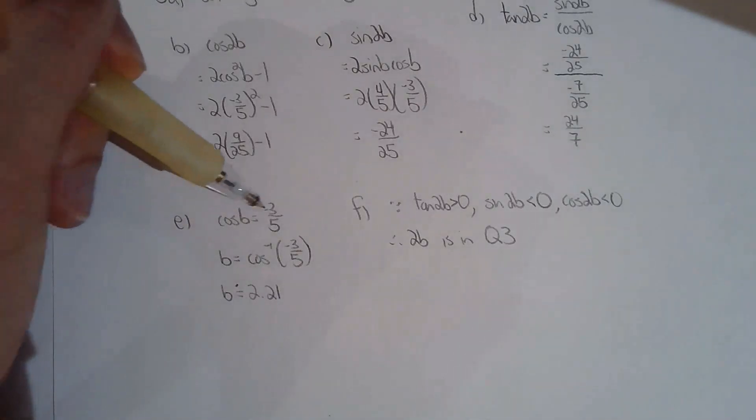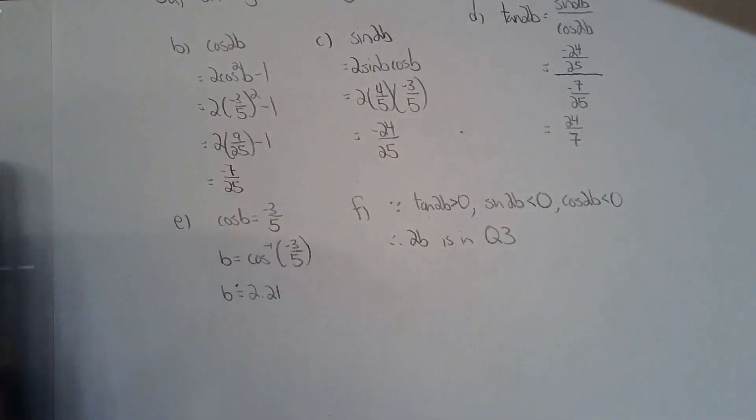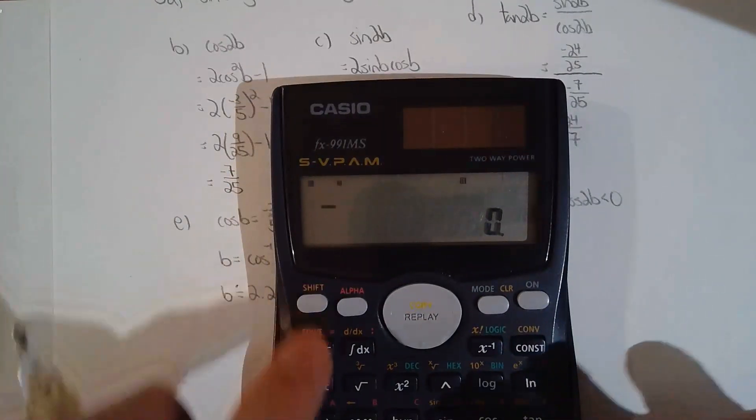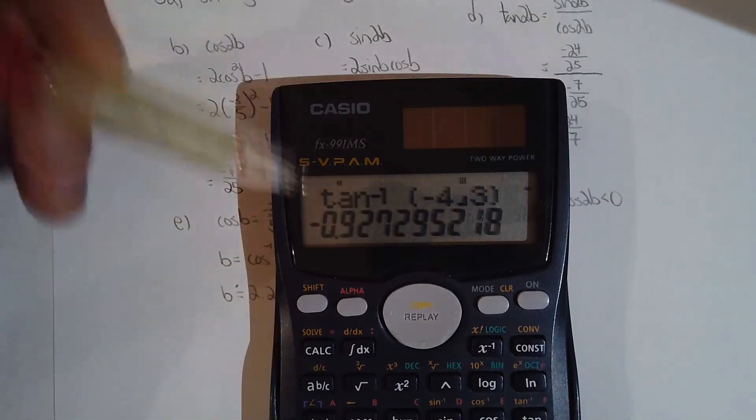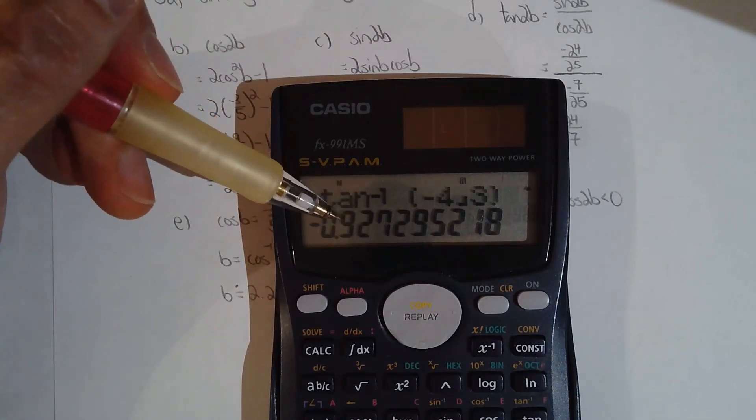So cos b is negative three fifths. And I can find you the angle of b by taking the inverse cosine of negative three fifths. Now make sure your calculator is in radian mode. Now what if I didn't use cos b? What if I chose tan b instead? So tan b is negative four thirds. So I'm going to inverse tan of negative four thirds. Okay, now this is not the correct answer.